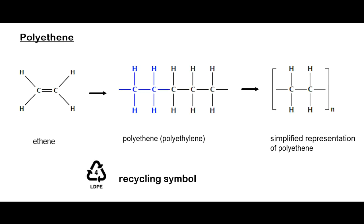The first example of an addition reaction we need to know is polyethene. The ethene molecule undergoes addition to form the polyethene molecule. The monomer has a double bond and the polymer has single bonds, with the repeating unit shown. The double bond breaks to form very, very long chains which we call polyethene.